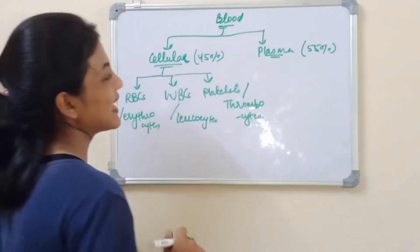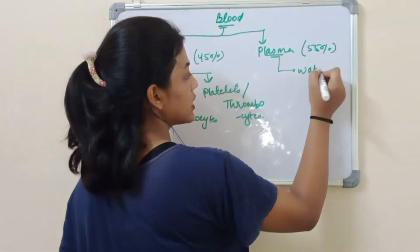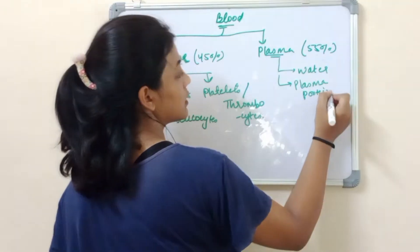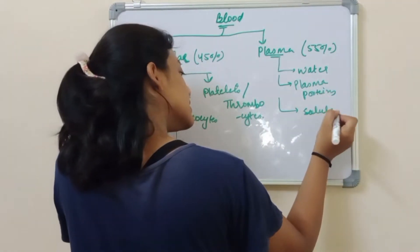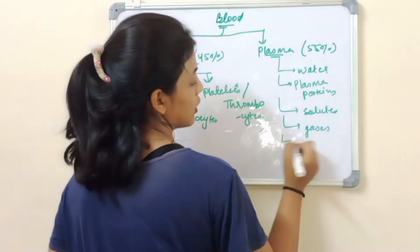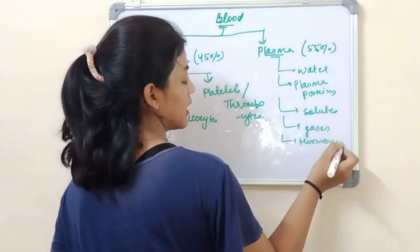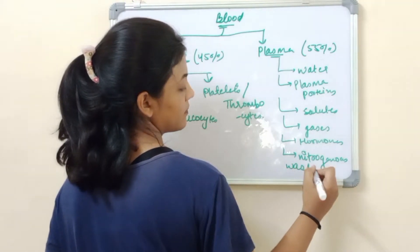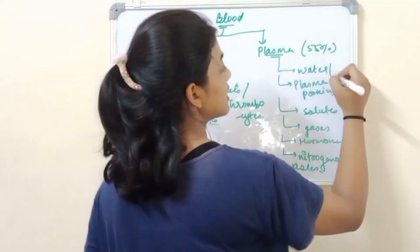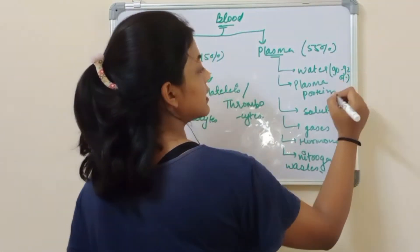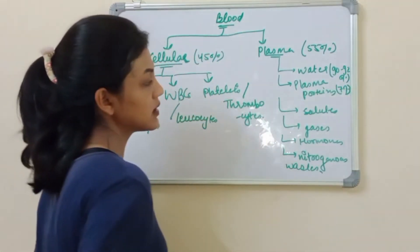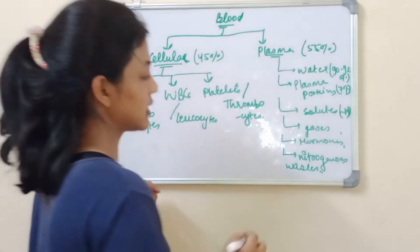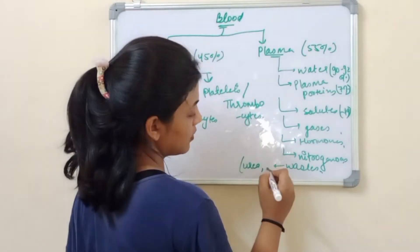Plasma is composed of water, some plasma proteins, some solutes, gases, hormones, and nitrogenous wastes. Water is 90 to 92%, plasma proteins about 7%, and the rest about 1%. Nitrogenous wastes like urea, ammonia, etc., are present in very low concentration.